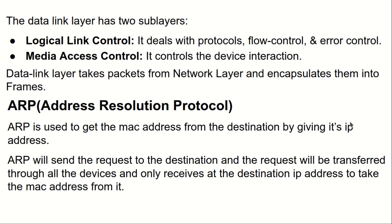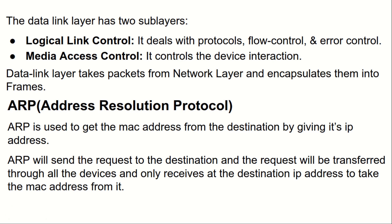ARP — Address Resolution Protocol — is used to get the MAC address from a destination device by providing its IP address. ARP sends a broadcast request to all devices in the network; only the device matching the destination IP address responds with its MAC address. All other devices ignore the request, and the frame is ultimately delivered to the correct destination.